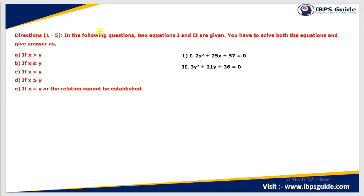This is the direction of the question. In the following question, two equations — one and two — are given. We have to solve both equations and give the answer as: x greater than y, x greater than or equal to y, x less than y, x less than or equal to y, x equal to y, or the relation cannot be established. Basically, they give us two equations where the first has x as the variable and the second has y. We find the values of x and y, then compare and choose our option.